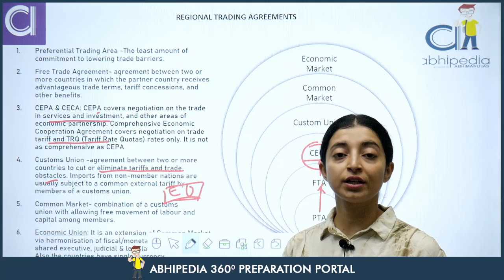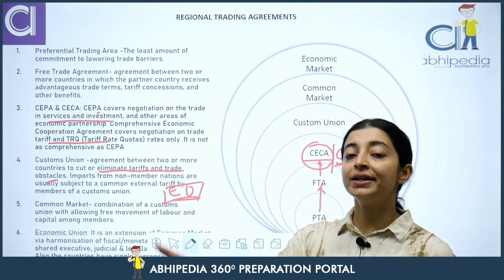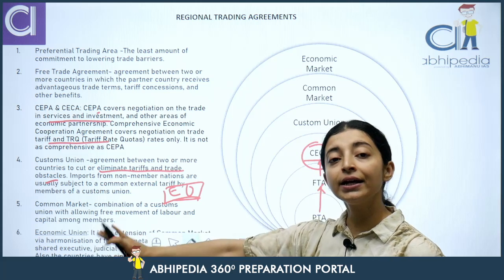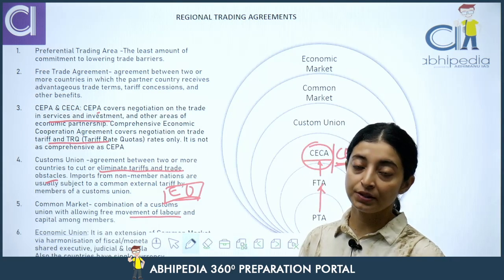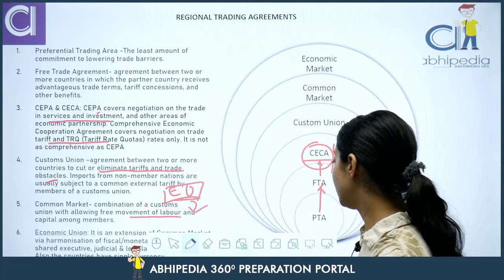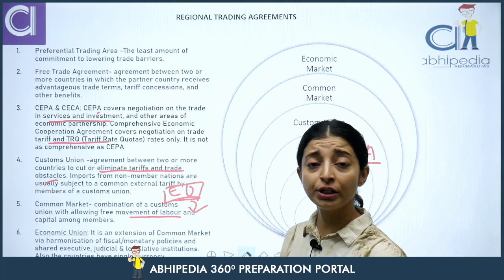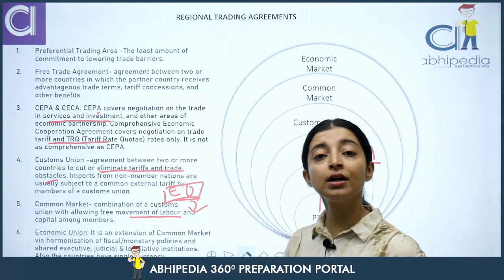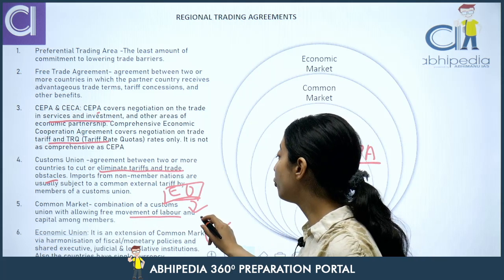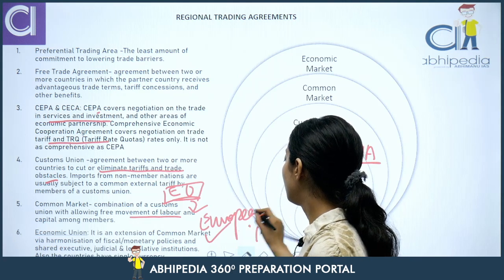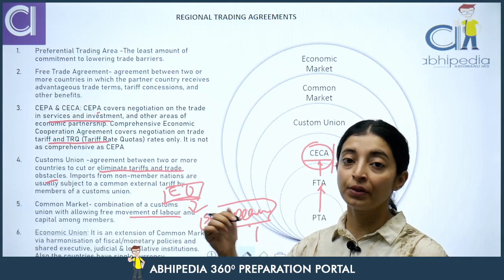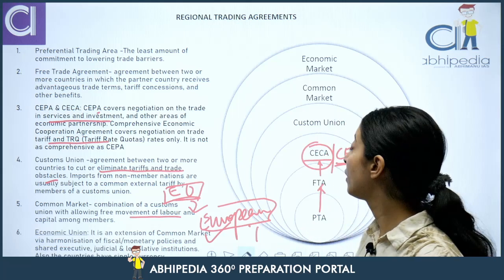Inside a Customs Union, member nations adopt similar policies towards outside nations — different policies for trade inside the union versus outside the union. Next is the Common Market, which is a Customs Union plus the free movement of labour and capital. The European Union is an example of a common market. Beyond that is the Economic Union, which is an extension — where fiscal, monetary, and judicial policies are also common, and currency is the same. The European Union is again an example at this level of economic integration.